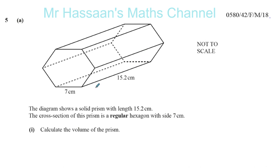Here we have a diagram which shows a solid prism. Solid prism means it has a constant cross-sectional area all the way through this face. The length of the prism is 15.2 cm. The cross-section is a regular hexagon with sides 7 cm. It does not actually look like it is regular, but remember, not to scale. Sometimes they do that on purpose to throw you off a bit.